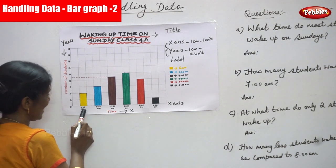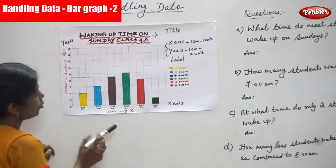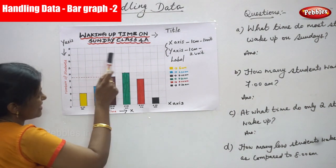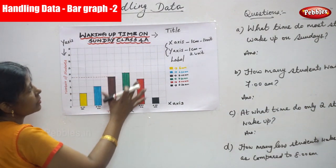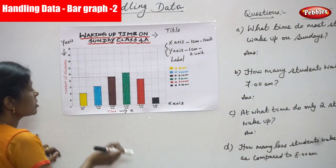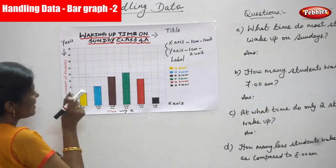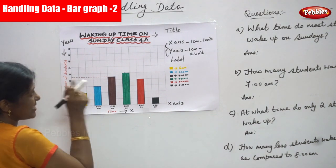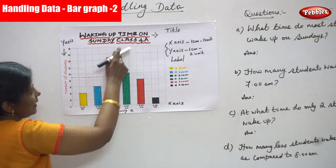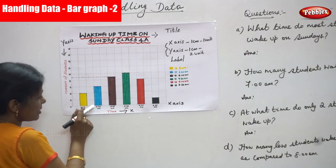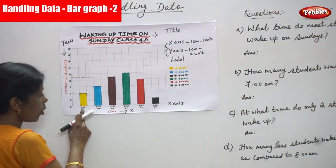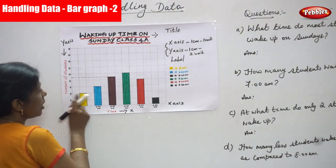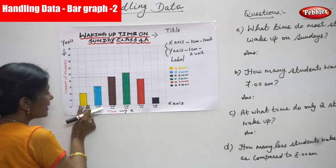The yellow color vertical bar represents 6 a.m. So you have to find out how many students wake up at 6 a.m. That is 4 students wake up at 6 o'clock on Sunday in class 4A. How many students wake up at 6 o'clock on Sunday? 4 students.